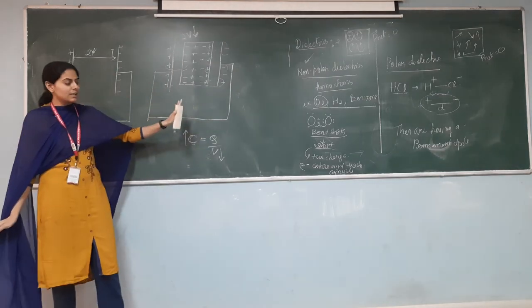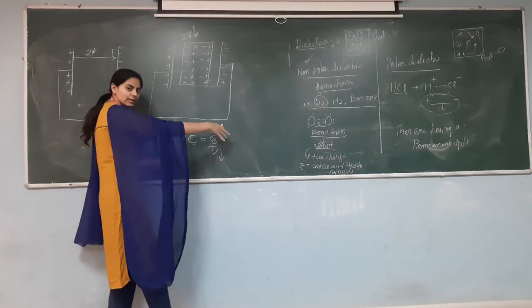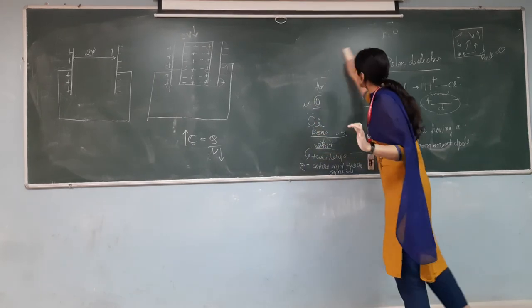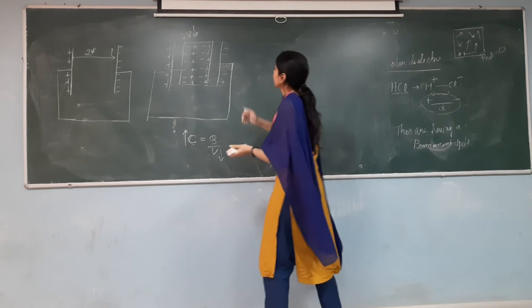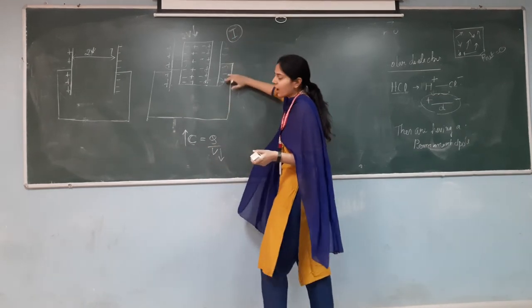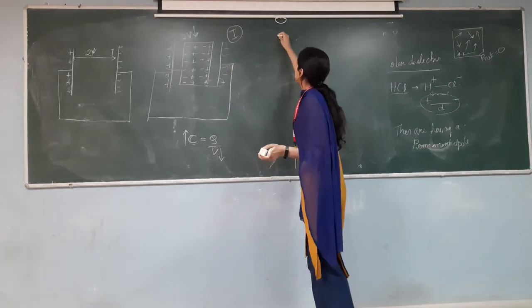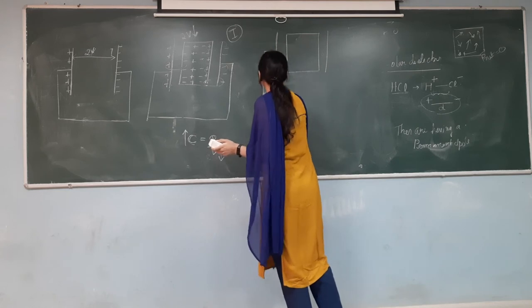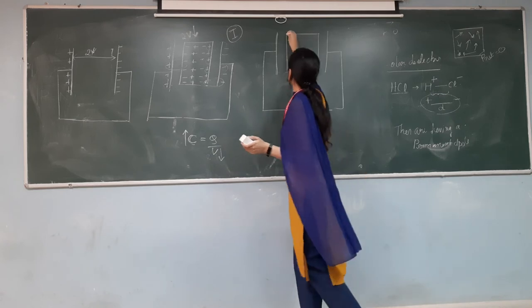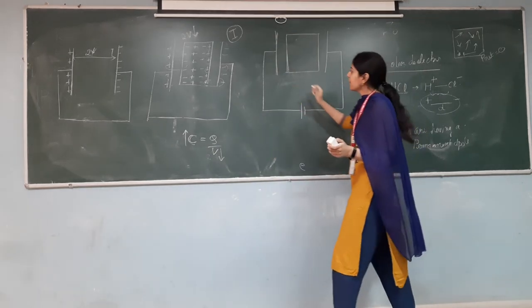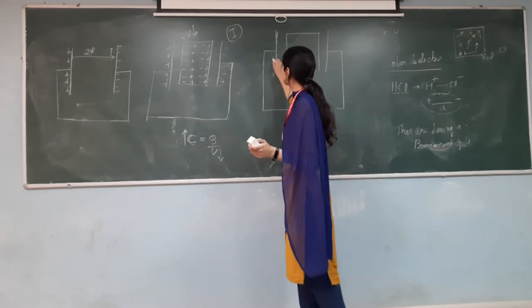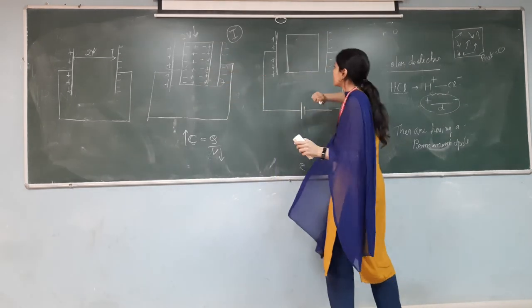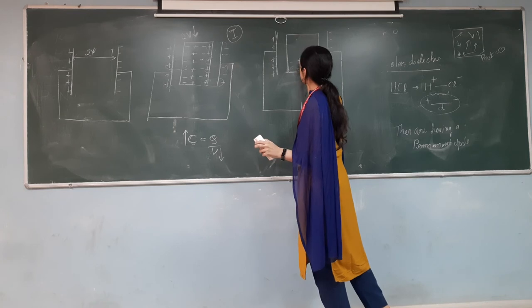Now let's see another case where we do not remove the battery. The capacitor plates are still charged — one positively and one negatively — and the same polarization occurs in the non-polar dielectric: negative charges align toward the positive plate and positive charges align toward the negative plate.